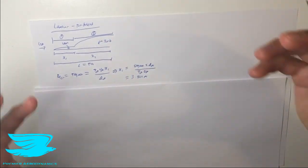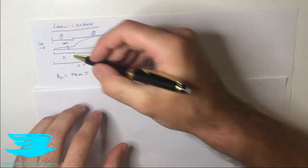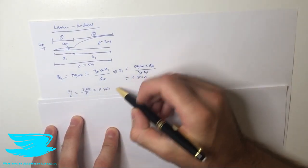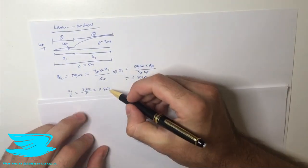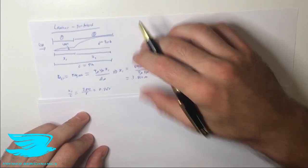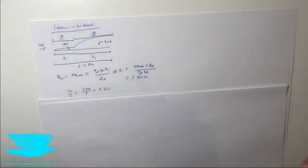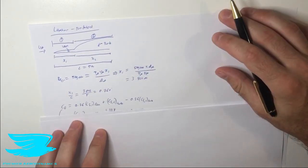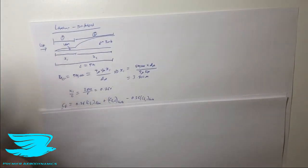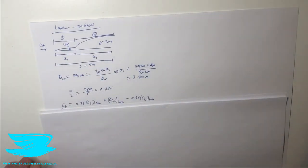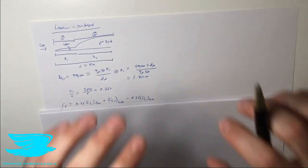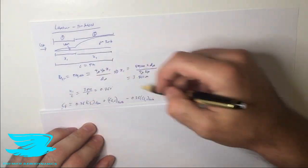This tells us that over the entire 5-meter flat plate, 76% is laminar and the remaining 24% is turbulent. So the majority of this flat plate is experiencing a laminar boundary layer. To calculate the skin friction drag coefficient, we use an approximate equation — it's not exact. The only way to get the exact skin friction drag is through measurements, often with hot wires or with CFD at the interface between the surface and the flow. But this equation is a very good approximation.